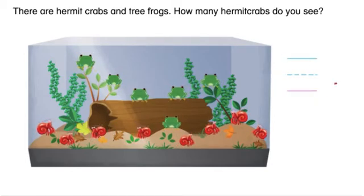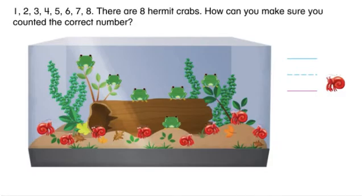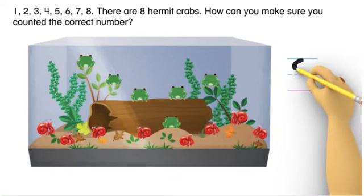How many hermit crabs do you see? One, two, three, four, five, six, seven, eight. There are eight hermit crabs.